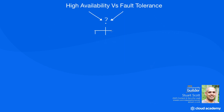They both ultimately have the same goal: to keep your systems up and running should something fail within your architecture. But there is a difference. High availability can be defined by maintaining a percentage of uptime which maintains operational performance, and this can closely be aligned to an SLA. AWS has many SLAs for its services where they implement their own level of resilience and management to maintain that level of high availability.